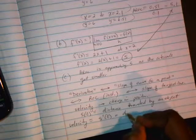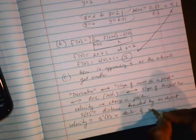then velocity is just the derivative of s'. It's the derivative of the position, of the distance.